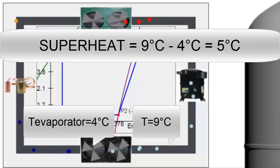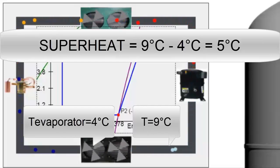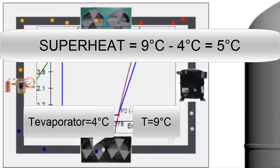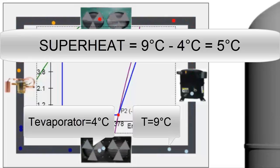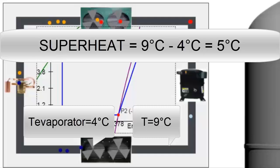The value of superheat varies depending on the thermal load of the air conditioning system. For example, in a room or space with many people, superheat may exceed 5 degrees Celsius, while with a lower thermal load or fewer people in the room, superheat will be below 5 degrees Celsius, even reaching as low as 0 degrees Celsius when the cooling demand is minimal.